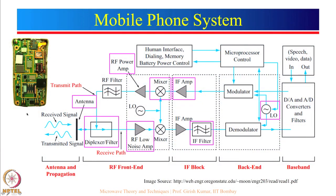Let us start with something which you are all familiar with — your mobile phone. In this simple mobile phone, there are too many things. There is an antenna used for both transmit and receive. You are transmitting a signal and receiving a signal. There is a diplexer or filter because the transmitter and receiver frequencies are different. This is the transmit chain and this is the receive chain.